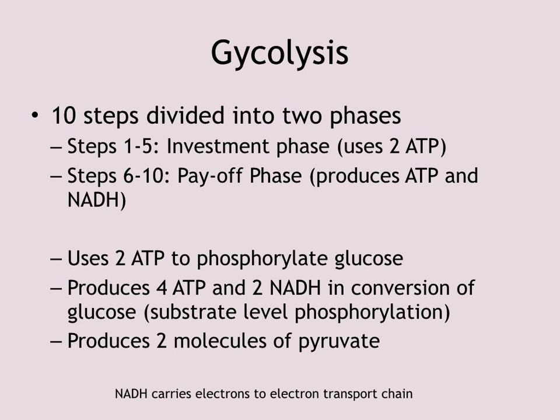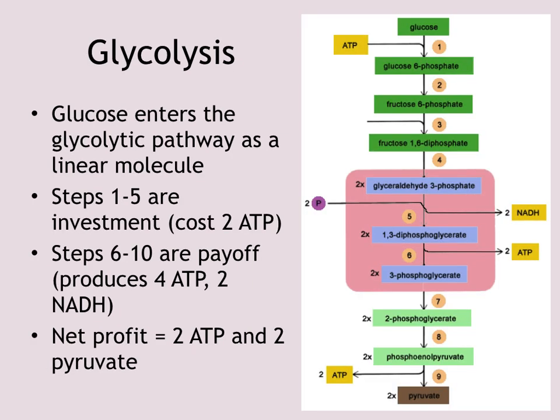In addition to two net ATP, we also produce two NADH — an electron carrier and energy intermediate. NAD+ picks up electrons during glycolysis and carries them to the electron transport chain, where a single NADH electron can make around three to four ATP. ATP production in glycolysis is carried out by substrate-level phosphorylation. The final product of glycolysis is pyruvate (pyruvic acid), and we make two of those.